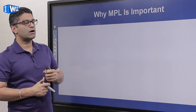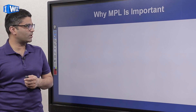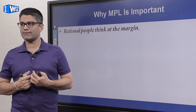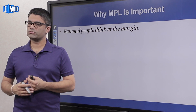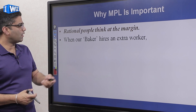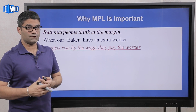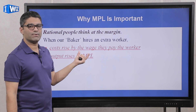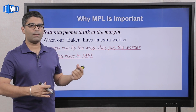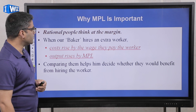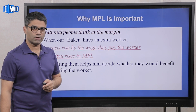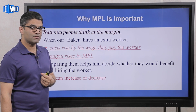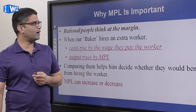In today's video we're going to concentrate a lot more on marginal product of labor because it is very important going forward. We assume producers are rational and act in their own self-interest. When a baker hires an extra worker, the cost is their wages and the benefit is how much output they produce, given by MPL. We'll look at whether MPL remains constant, goes up, or decreases — there are three cases.